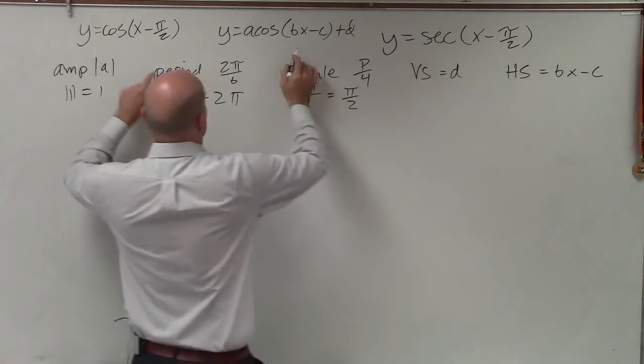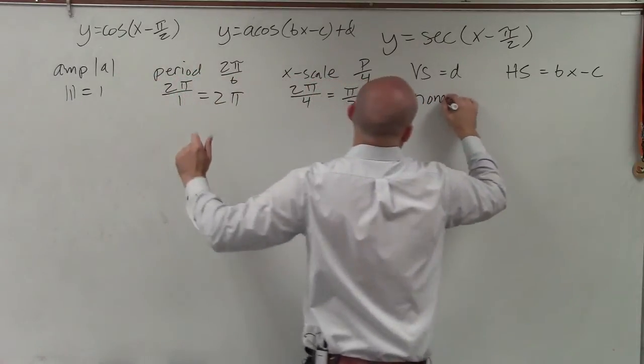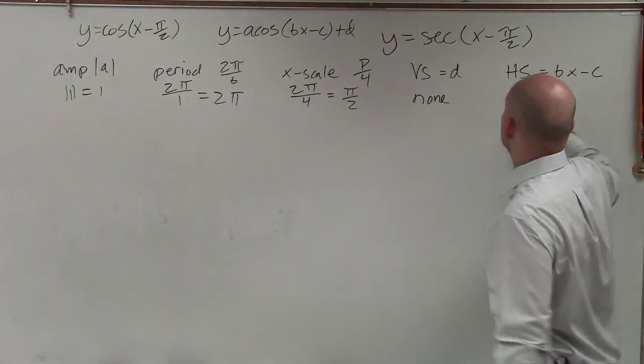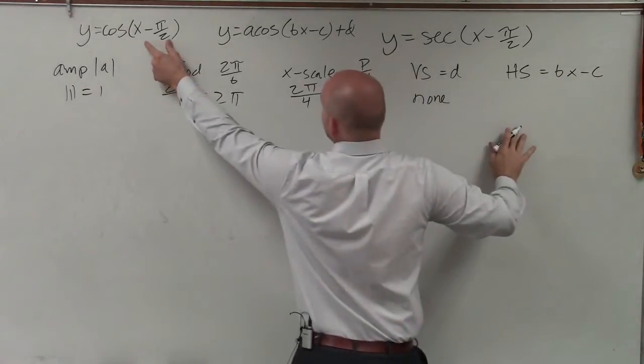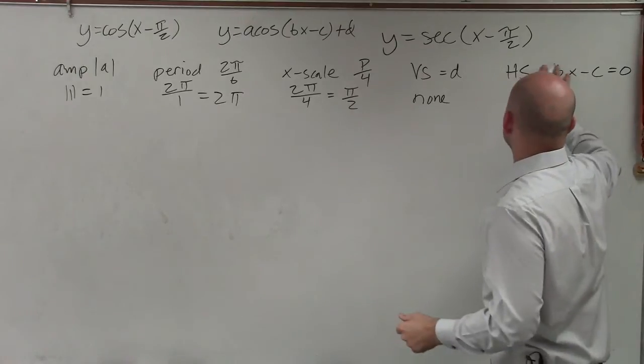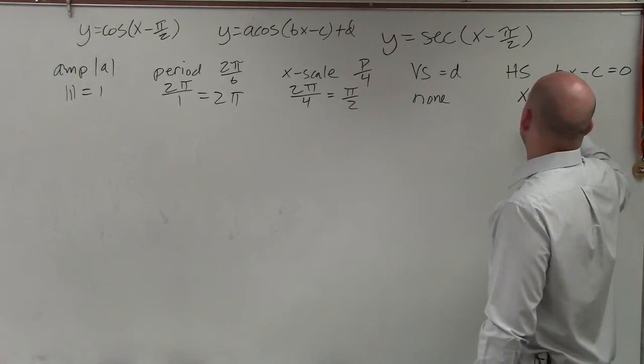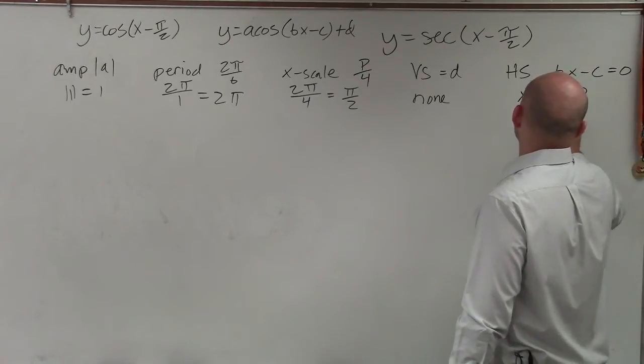My vertical shift, you can see, am I adding or subtracting outside my parentheses? No, so that's none. And my horizontal shift, all you do is you take whatever is inside your parentheses and set it equal to 0. So you're going to want to set that equal to 0. So I take x minus pi halves equal to 0, and x equals pi halves.